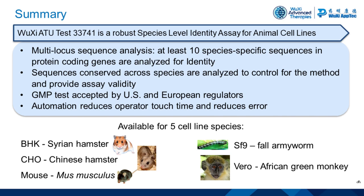You are using Ion Torrent sequencers — do you consider any other sequencing systems such as Illumina? At the time we were considering what systems to purchase, we went with the Ion Torrent because of the longer sequence lengths and shorter run times compared with Illumina. But now Illumina instruments can generate similar length sequences and have shorter run times.